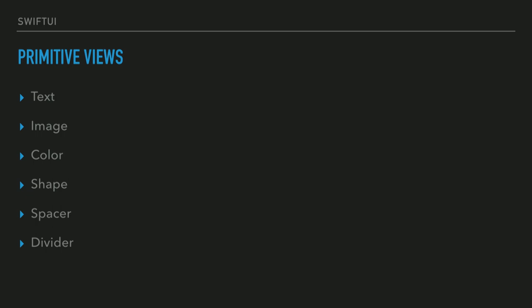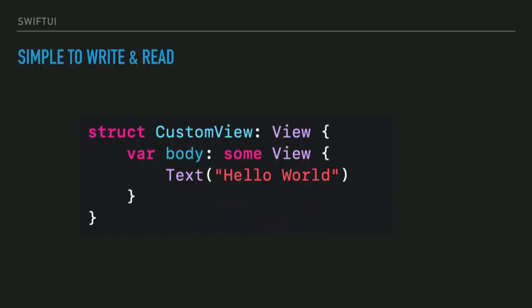An important part of SwiftUI is that it's based on composition. We start with smaller, single-purpose views and combine them to make larger, more complex views. This is what a simple Hello World app looks like in SwiftUI. We have a custom view that conforms to the View protocol, with a computed property that returns a view — in this case, just a text label that reads Hello World.